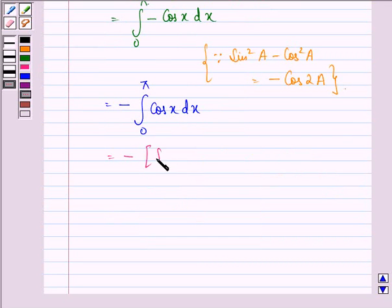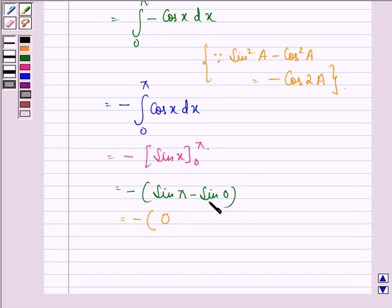So, we have -sin x evaluated from 0 to π. This is equal to -sin π minus sin 0. This is equal to minus, now sin π is 0 and sin 0 is also 0. So, we have 0. Our answer to this question is 0.